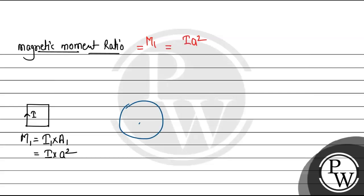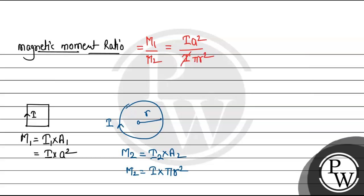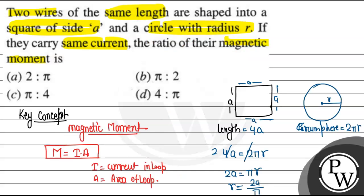Now for the circular wire with radius r, we suppose its magnetic moment is M2. M2 = i2 × area2. The current is the same i (as stated in the problem), and the area of a circle is πr², so M2 = i·πr².